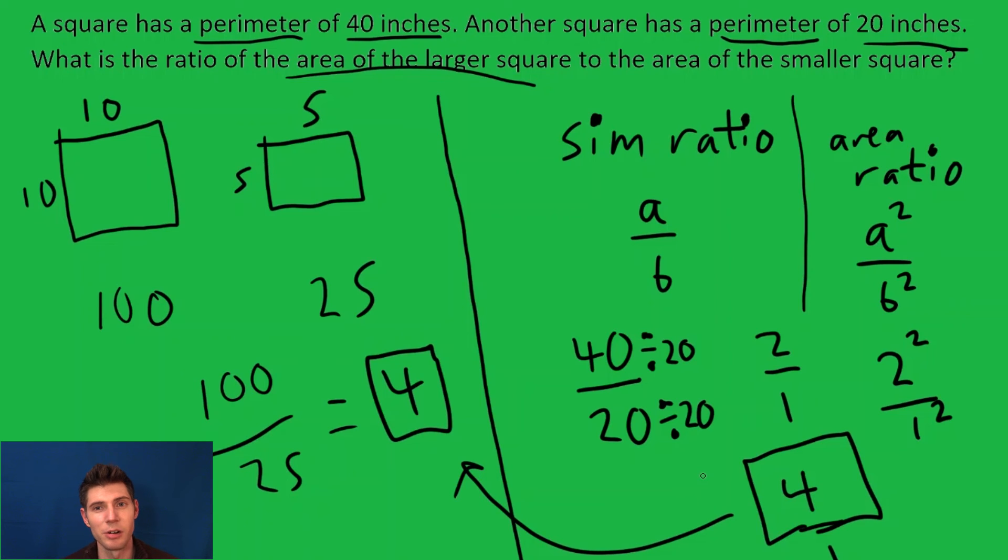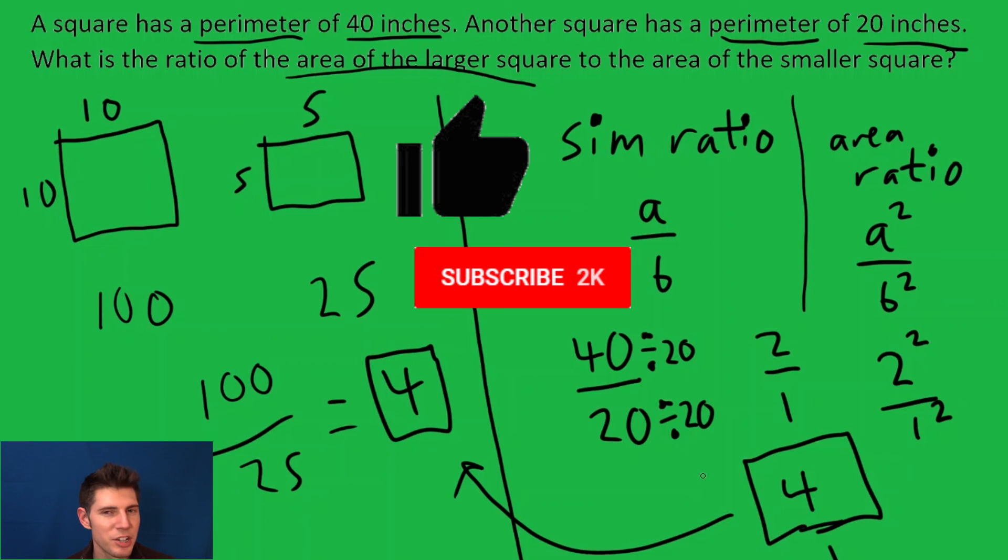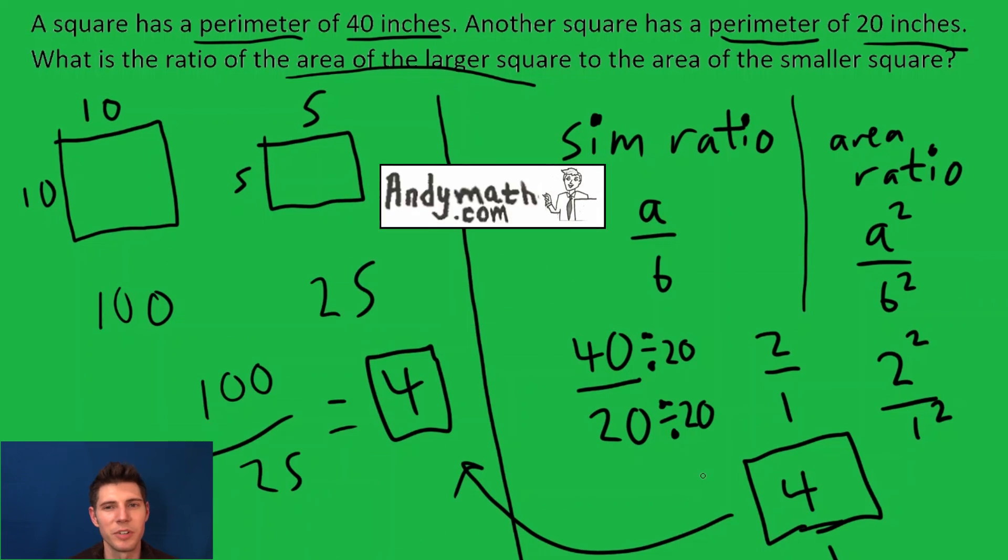So either way is fine—just drawing the actual squares or remembering that the area ratio is the square of the similarity ratio. If this makes sense, please like and subscribe. Check out andymath.com for more videos and study guides. I'll talk to you guys soon.